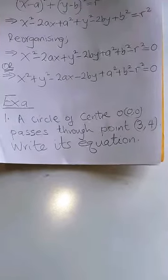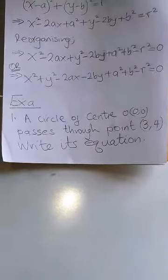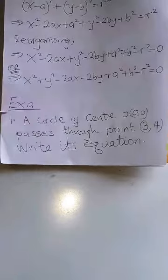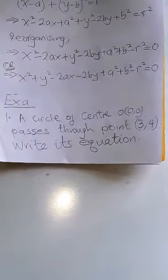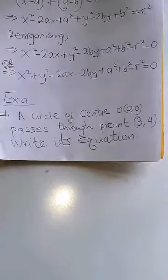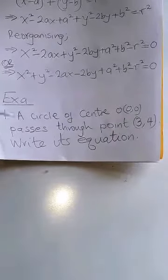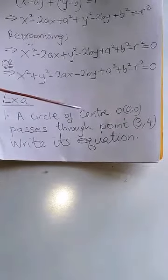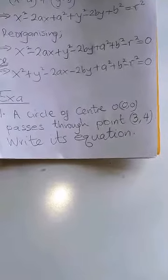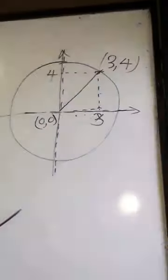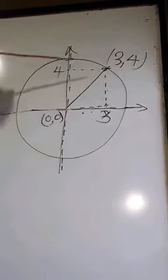We continue with equation of a circle and we now want to look at examples involving equations of a circle. Example one: a circle of center (0, 0) passing through a point (3, 4) — write its equation.